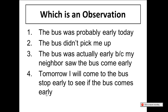Let's check this out — which of these is an observation? I'd recommend pressing pause, reading the choices on your own, and then coming back. The choices are: 'the bus was probably early today,' 'the bus didn't pick me up,' 'the bus was actually early because my neighbors saw the bus come early,' and 'tomorrow I will come to the bus stop early to see if the bus comes early.' The observation is number two: you observe that the bus didn't pick you up today. The other choices are not observations.